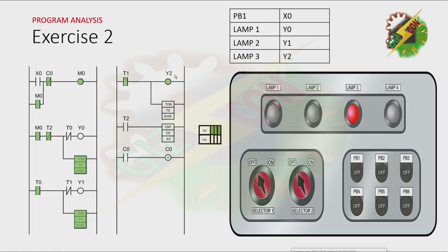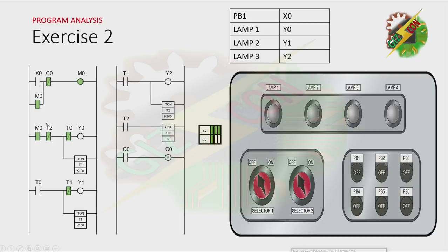Y2 will turn on, and T2 will be activated after 1 second. Because T2 is activated, the count value of C0 will increase, and the normally closed contact of T2 will be open, causing T0, T1, and T2 to deactivate. Because T2 is deactivated, the normally closed contact of T2 goes back to its initial state and the cycle repeats. If the count of C0 is completed, the normally closed contact of C0 will make M0 turn off, and that will make the process stop.